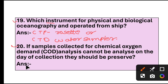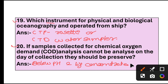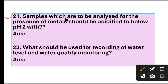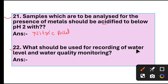...answer is below pH 2 by addition of concentrated sulfuric acid. Question 21: Samples which are to be analyzed for the presence of metals should be acidified to below pH 2 with concentrated nitric acid. Question 22: What should be used for recording of water level and water quality monitoring? Answer: By zoometer.